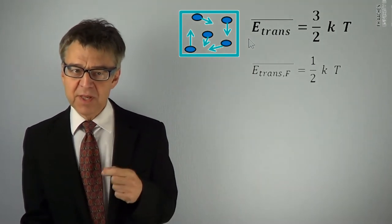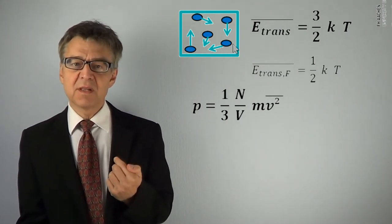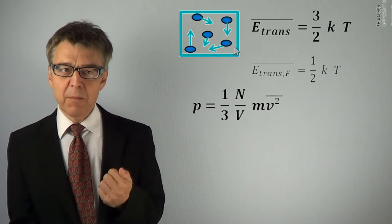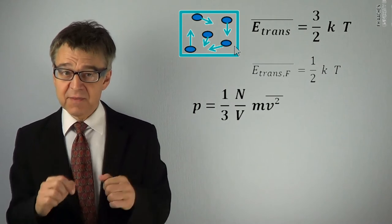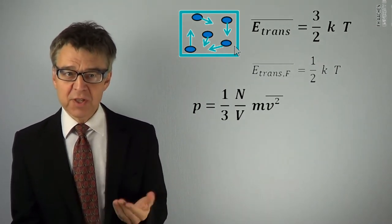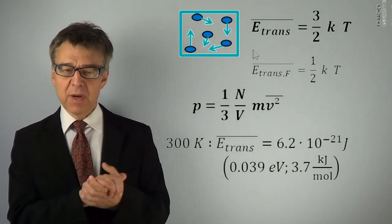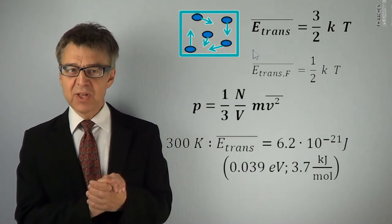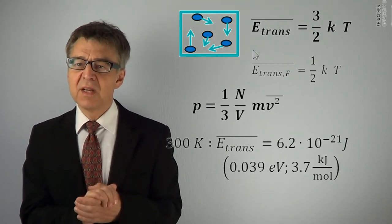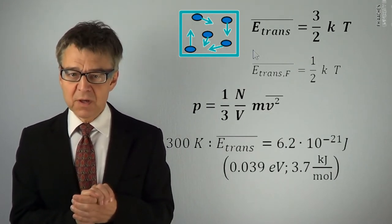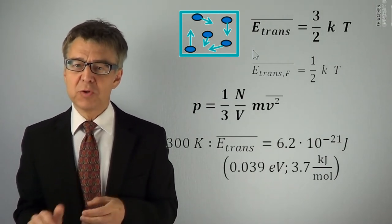The pressure p is calculated by the following formula from microscopic properties. One-half mv squared corresponds to the kinetic energy and it is divided by the volume. So pressure is a measure of energy density. At room temperature, the average translational energy of any gaseous particle is 6.2 times 10 to the minus 21 Joule or 0.039 eV or 3.7 kJ per mole.